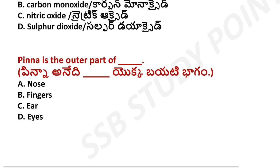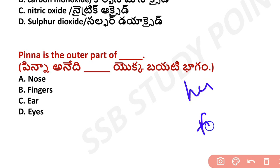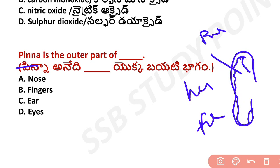The pinna is the outer part of the human body's ear. It is the external, visible part of the ear. Inner parts and outer parts of the ear have different functionalities. The pinna is the outermost part of the ear.